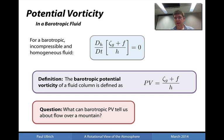So the question is then: what can barotropic potential vorticity tell us about flow over a mountain?